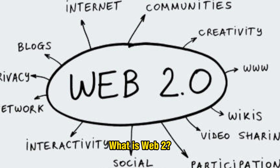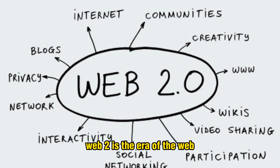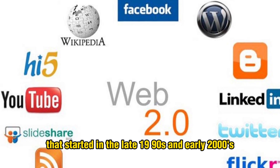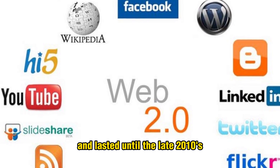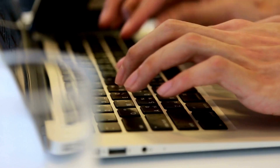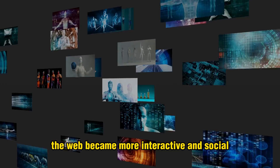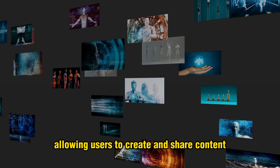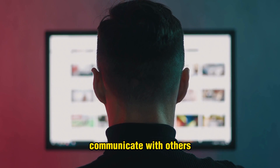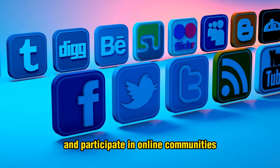What is Web 2? Web 2 is the era of the web that started in the late 1990s and early 2000s and lasted until the late 2010s. During this time, the web became more interactive and social, allowing users to create and share content, communicate with others, and participate in online communities.